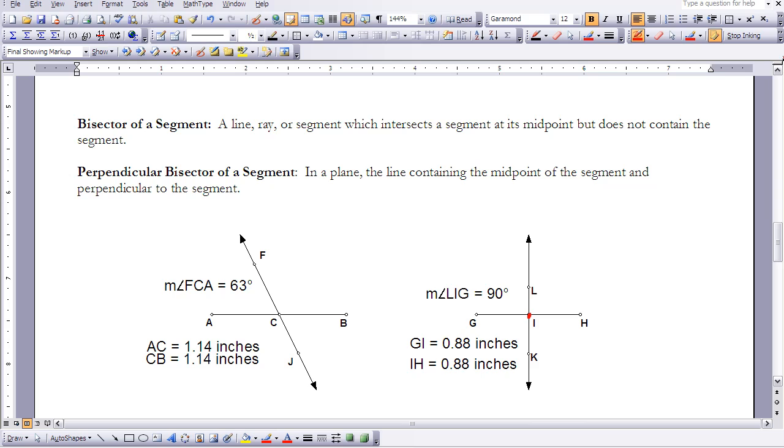There's other pieces to 3-9, but we're not going to be focusing on that information, just the bisector of a segment and the perpendicular bisector of a segment. That's the only part of 3-9 that we're going to focus our attention on this year. This concludes Lessons 3-8 and 3-9, and it also concludes our study of Chapter 3.